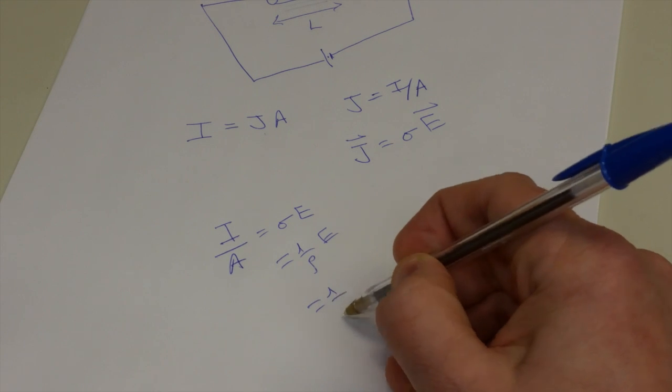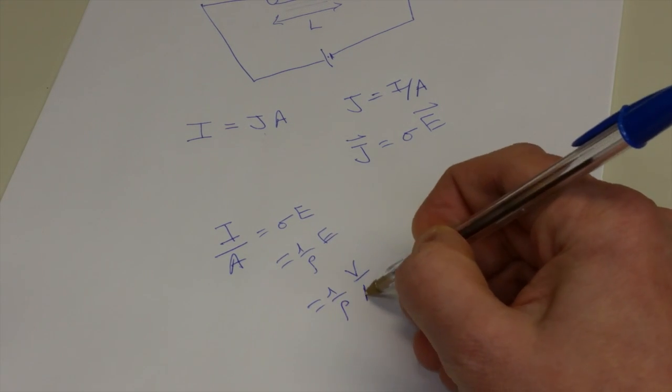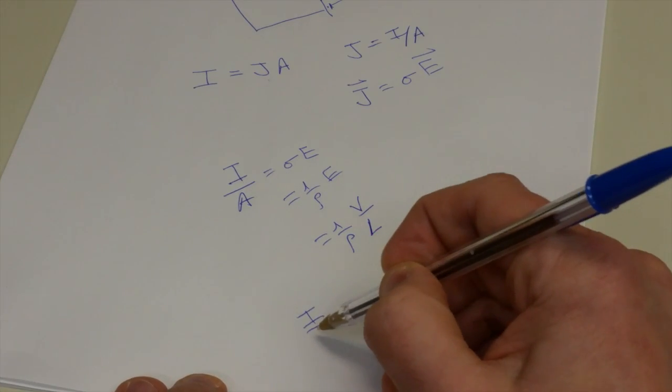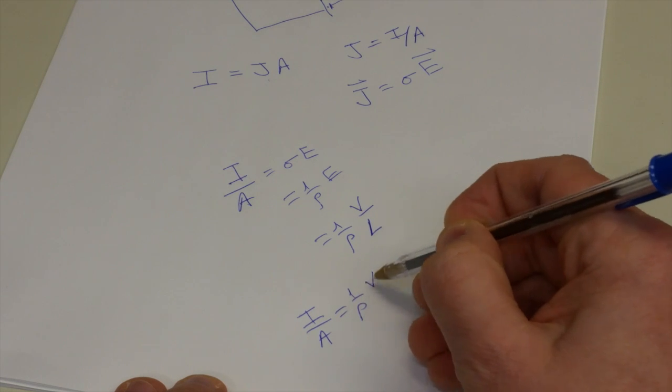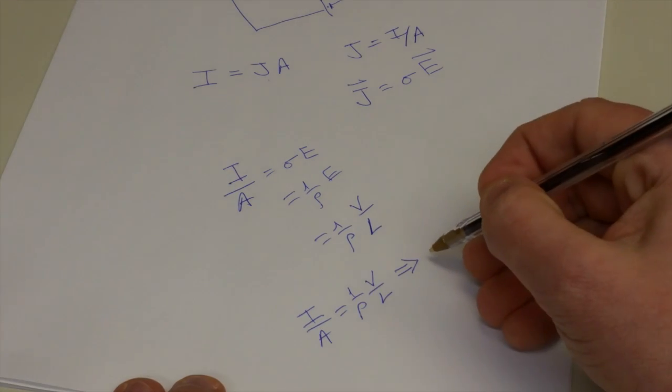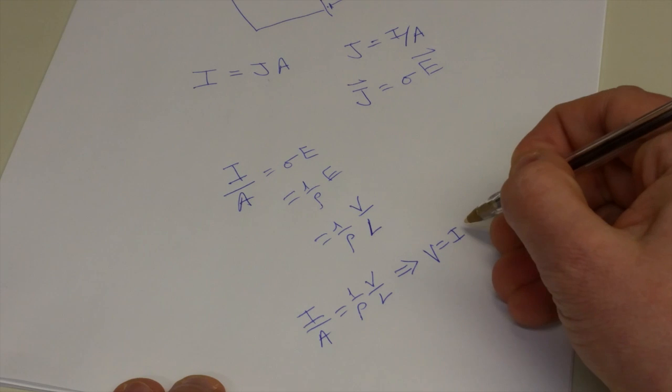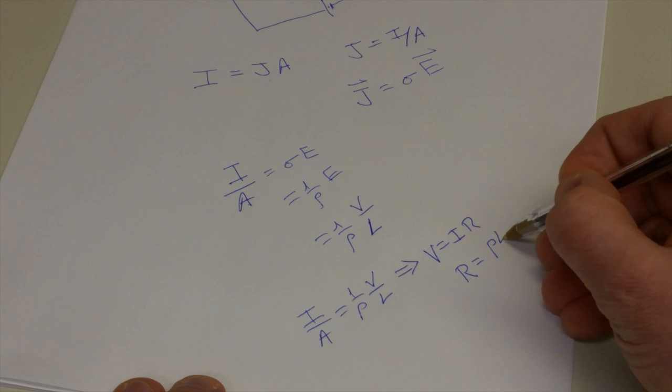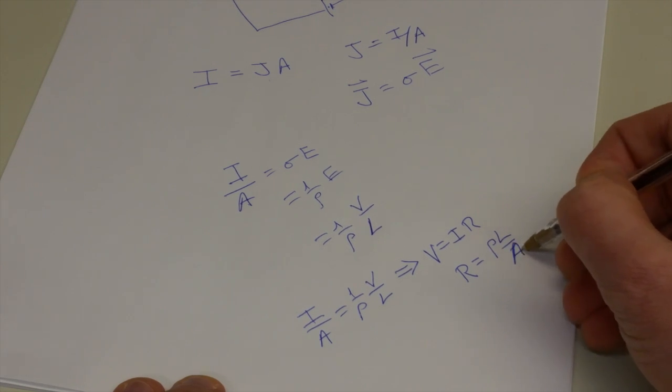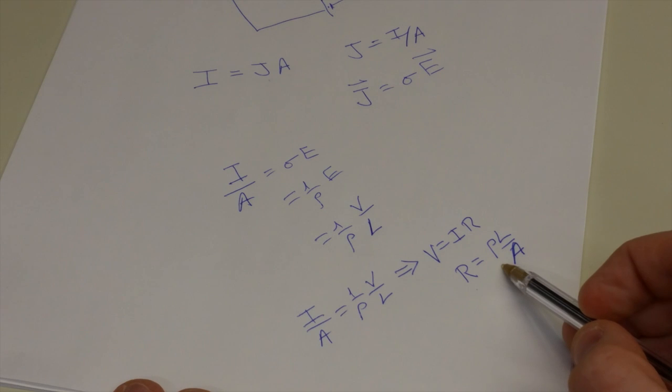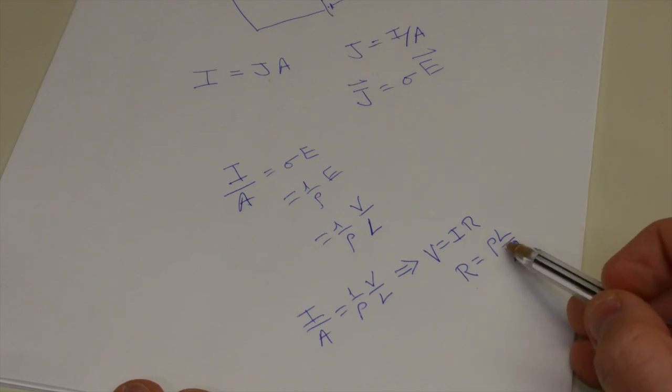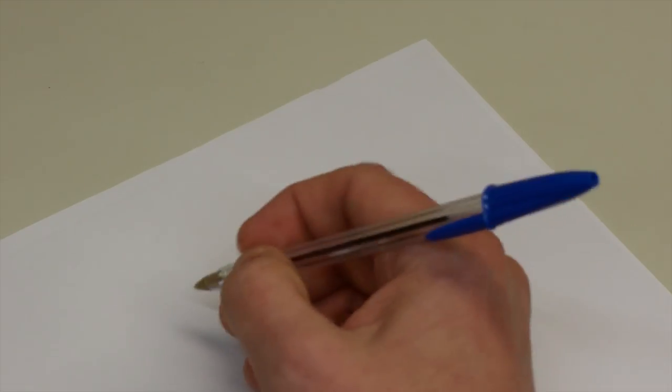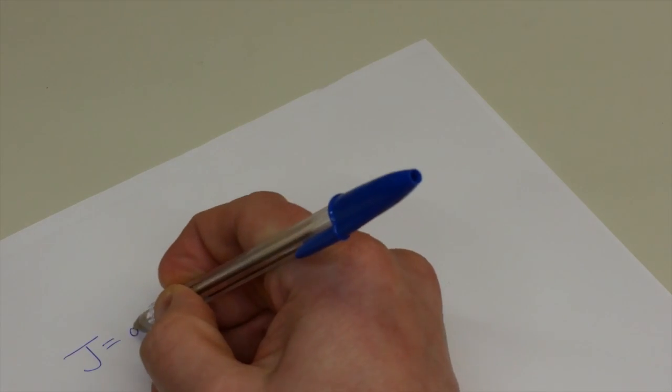So this will be equal to one over rho V over L. Just rewriting this, I over A is equal to one over rho V over L. We can write it as V equals I R, where R is rho L over A. Resistance is equal to the resistivity of the material times the length of the material divided by the cross-sectional area.